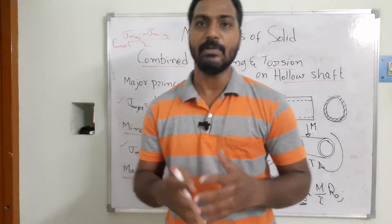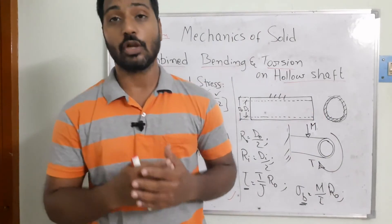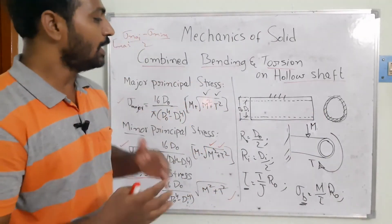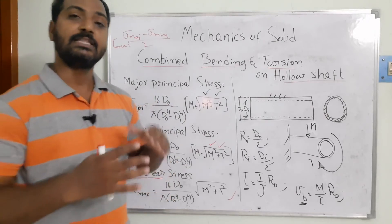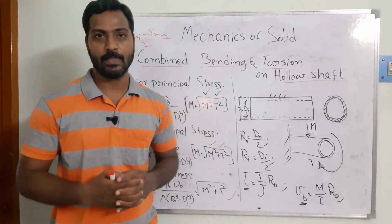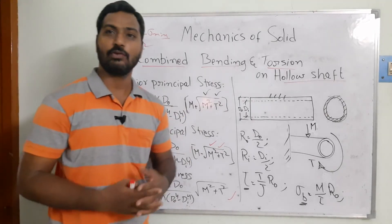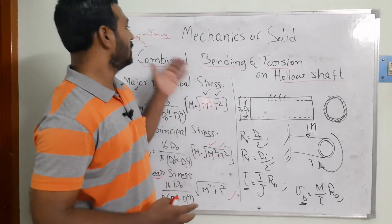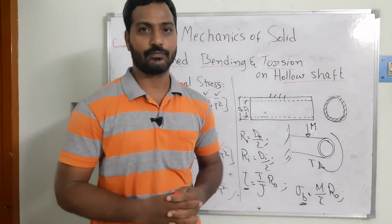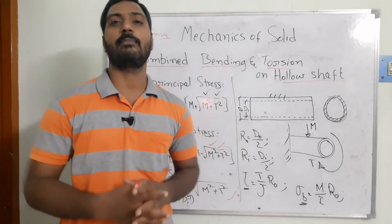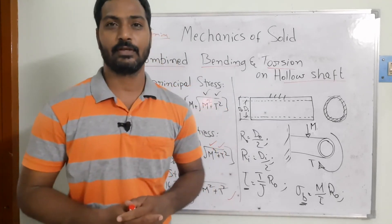This way we derive the mathematical model to understand the behavior of the material when subjected to both bending and torsional forces. Since bending and torsional forces are maximum at the outer surface of the member, we derived these equations on that basis. I hope you are able to understand the concepts of combined bending and torsional loads on a hollow shaft. If you still feel any confusion, please put it in the comment section so I can try to help you out.